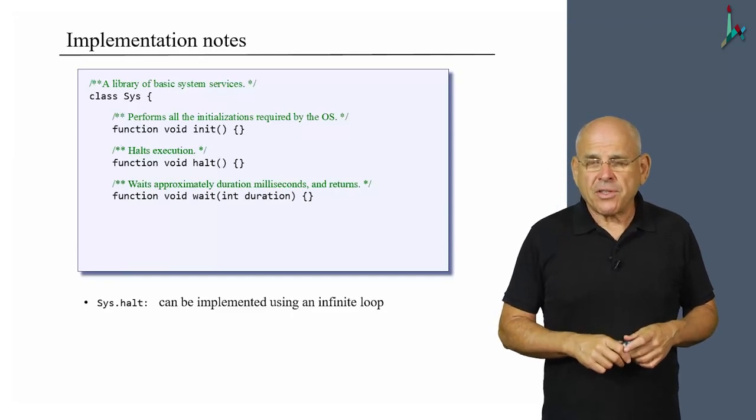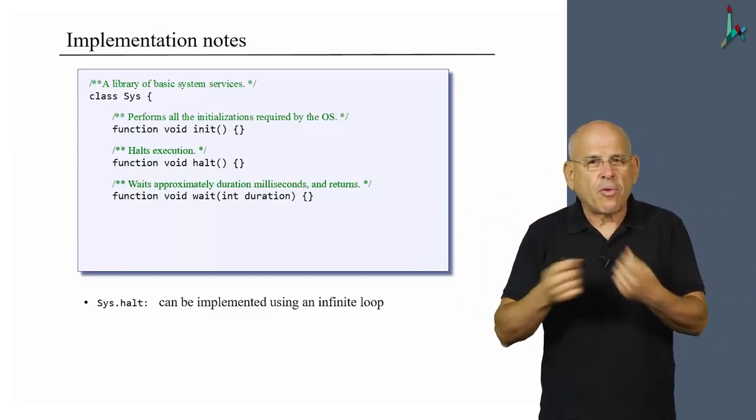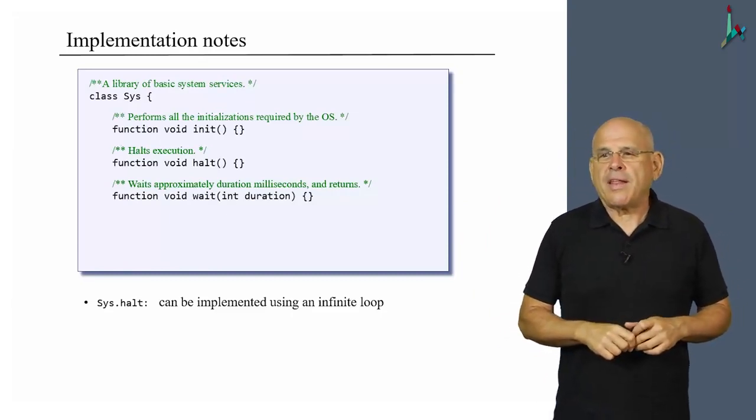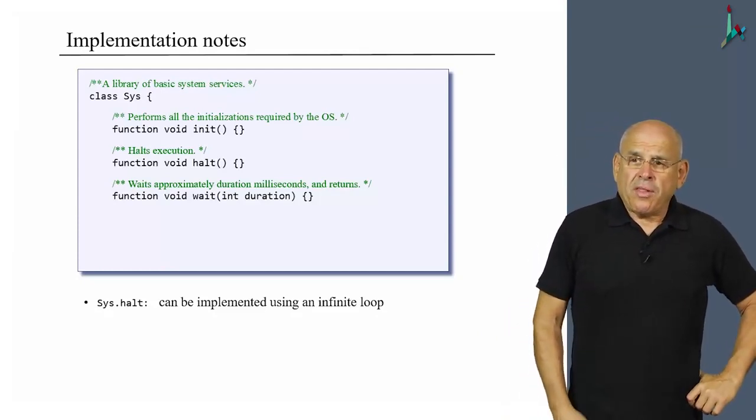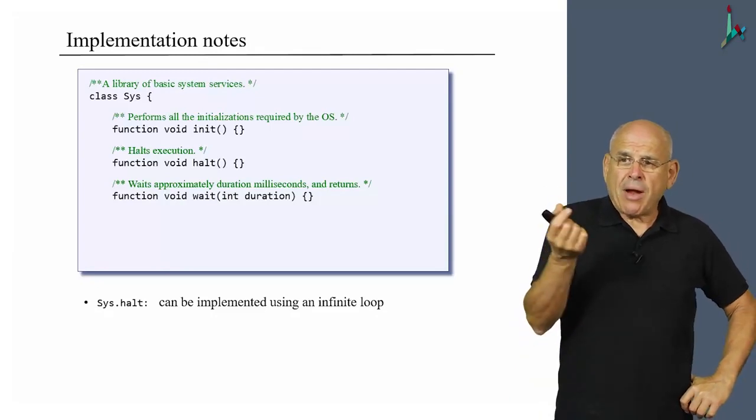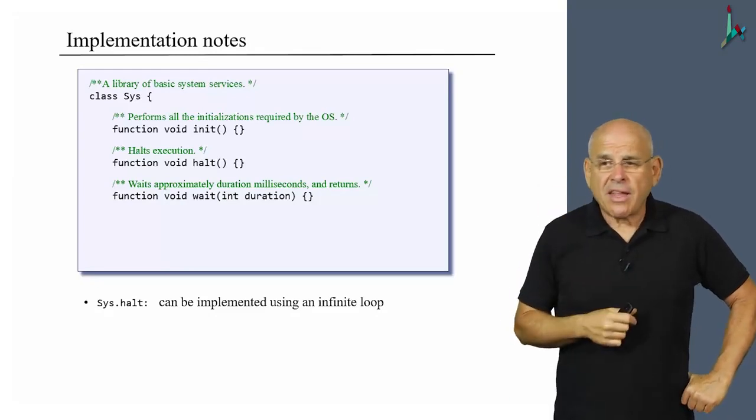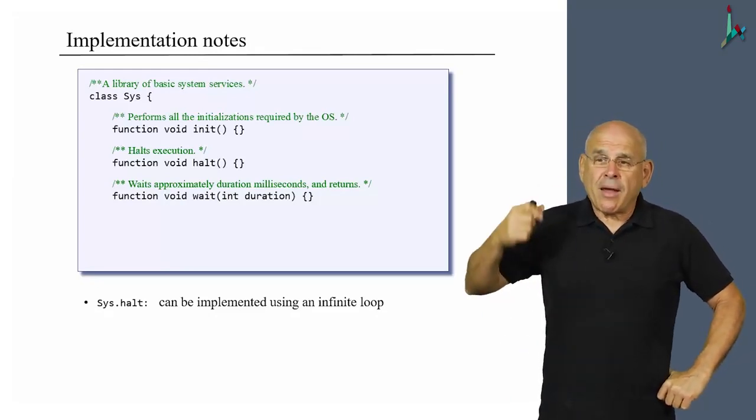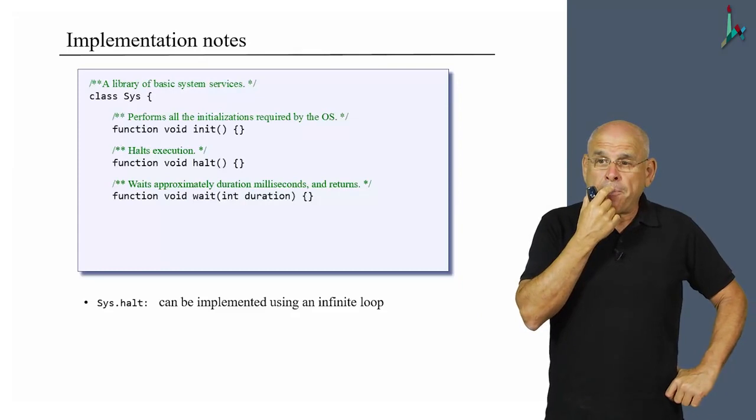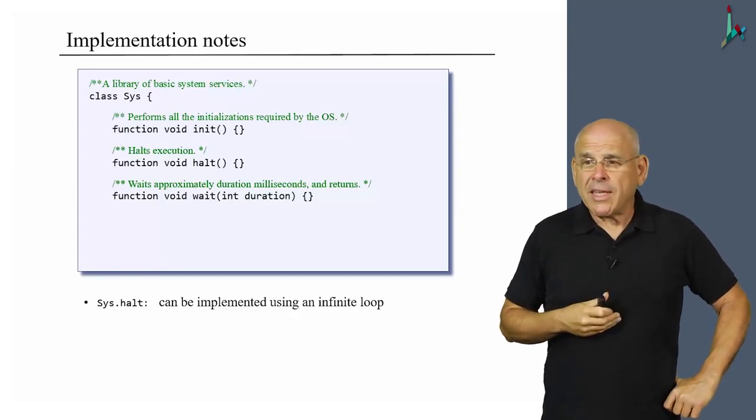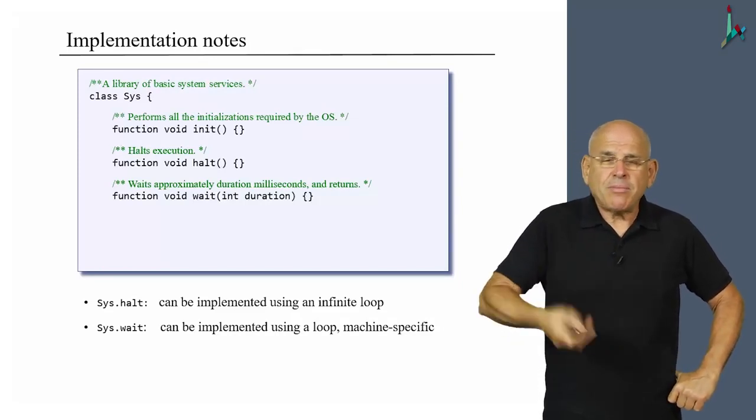Then we have a wait function, which is necessary when we implement all sorts of interactive programs and we want to control the length of various operations and so on. We deal with user interaction. So the wait function, according to its API, receives a certain parameter, which is the duration in milliseconds, and it waits for that duration. So if you provided the number three, it will wait for three milliseconds. Now, how should you implement it? Well, once again, I recommend that you use a loop.